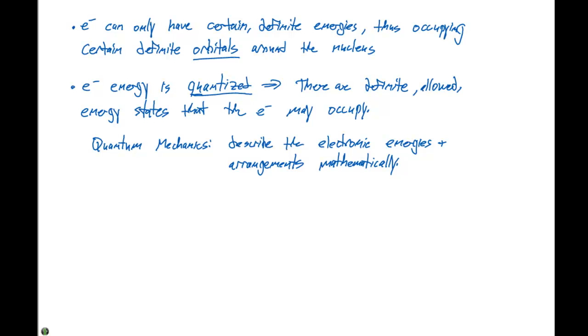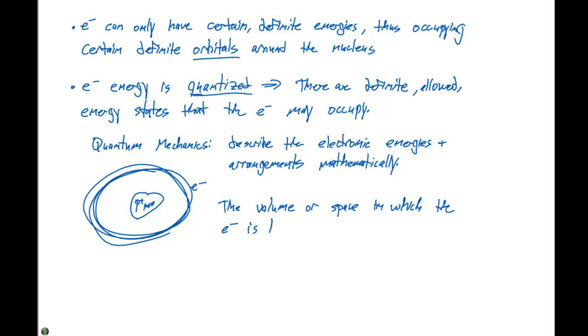So again, we have our protons and neutrons here in the nucleus. And the electrons are out here orbiting this nucleus. And we can kind of define this term orbital. And we can say that the volume or space in which the electron is likely to be found is referred to as an orbital.